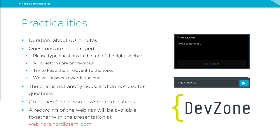Try to keep questions relevant to the topic — today we are talking about the NRF21540 front-end module. We will answer questions towards the end, as it's tricky to keep track while presenting. The chat is not anonymous and we do not use it for questions, though we will check it and comment. It's preferred to use the questions box on the top right-hand side.